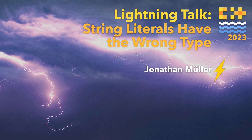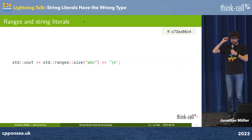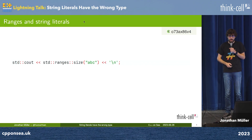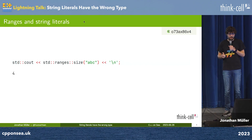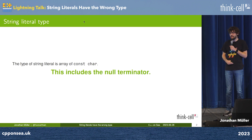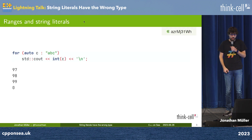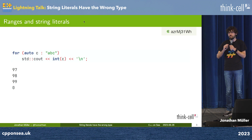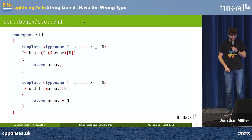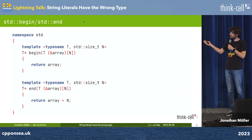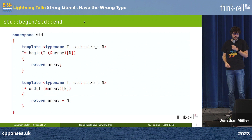String literals have the wrong type. What's the result of this program? What does it print? Four. Because the type of a string literal is an array of const char, and this includes the null terminator. It's pretty obvious when you print it — you get the letters and then you get zero, which is really annoying. The answer is that it's a const char array, so you get the begin and end overload and it just returns — includes the null terminator.